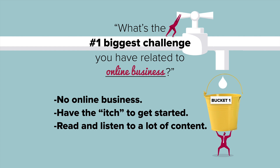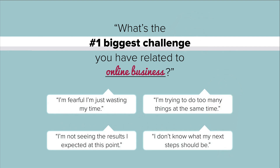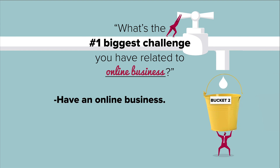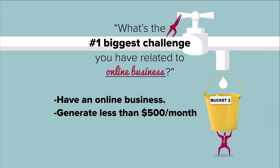Then I got another set of answers: 'I'm fearful I'm wasting my time,' 'I'm trying to do too many things at once,' 'I'm not seeing the results I expected,' 'I don't know what my next steps should be.' These became bucket number two — people who have an online business, they've already started, they generate less than $500 a month and want to make more. They also suffer from what Chris Ducker calls superhero syndrome from his book Virtual Freedom — they try to do everything on their own and haven't built a team.